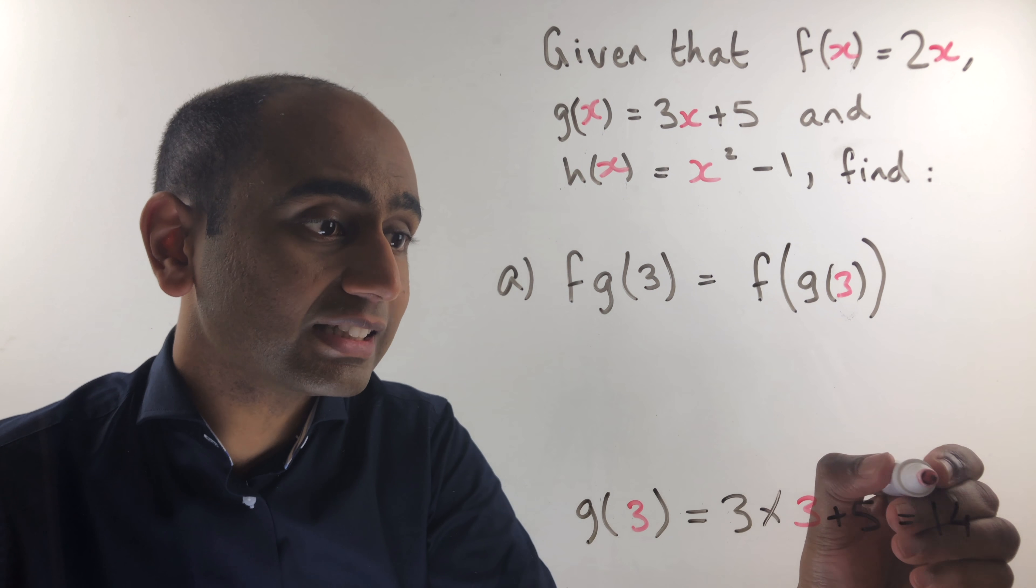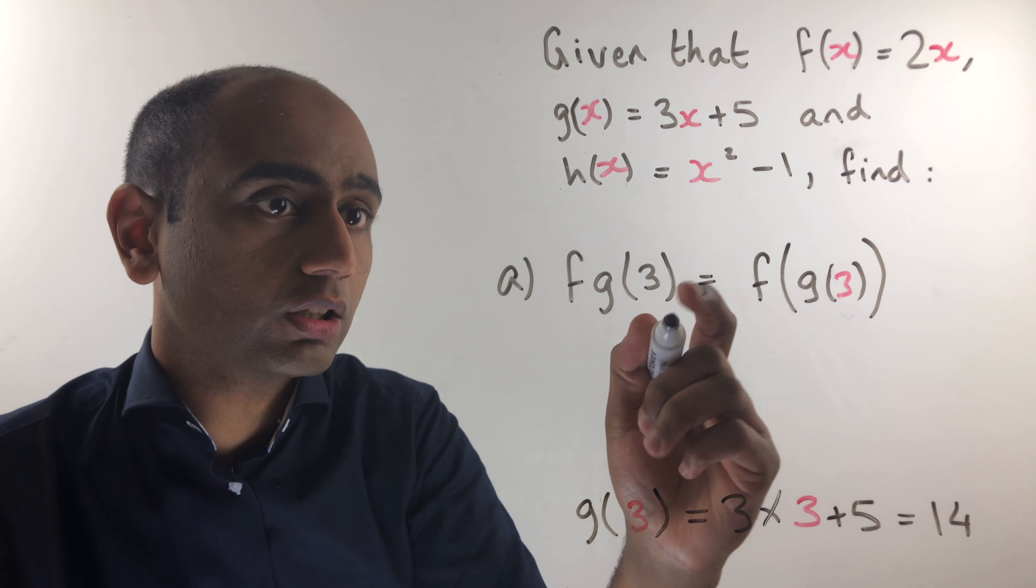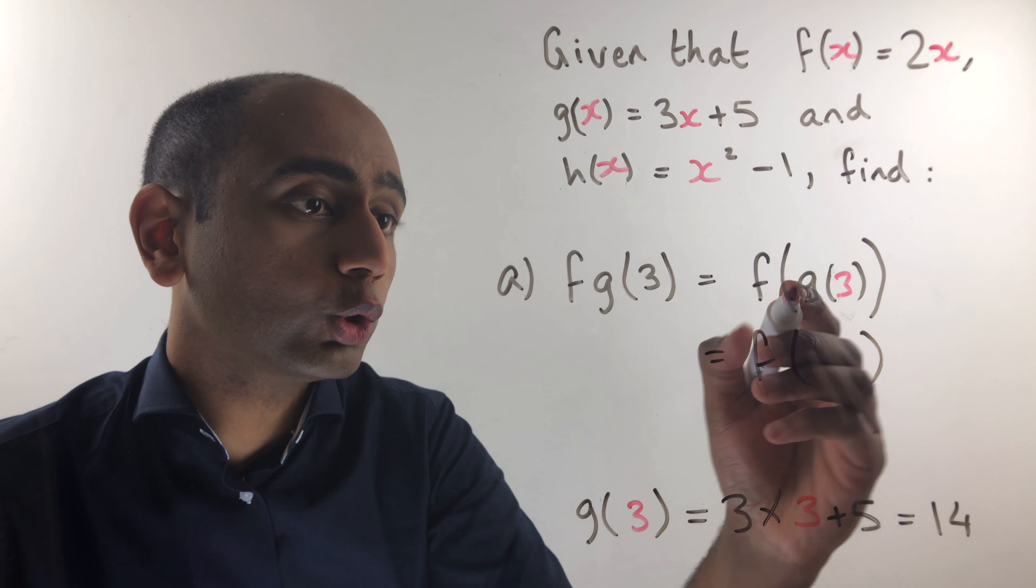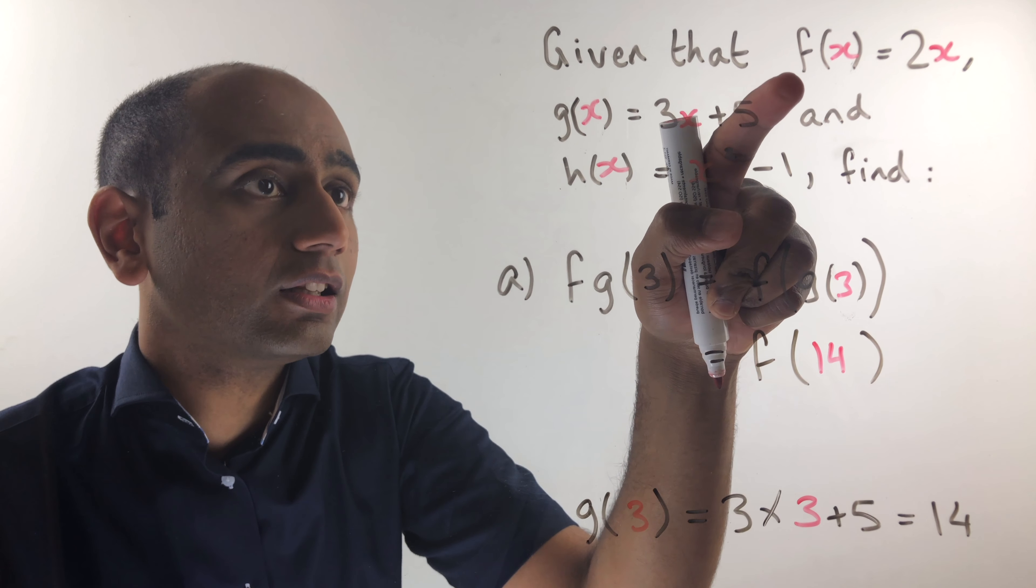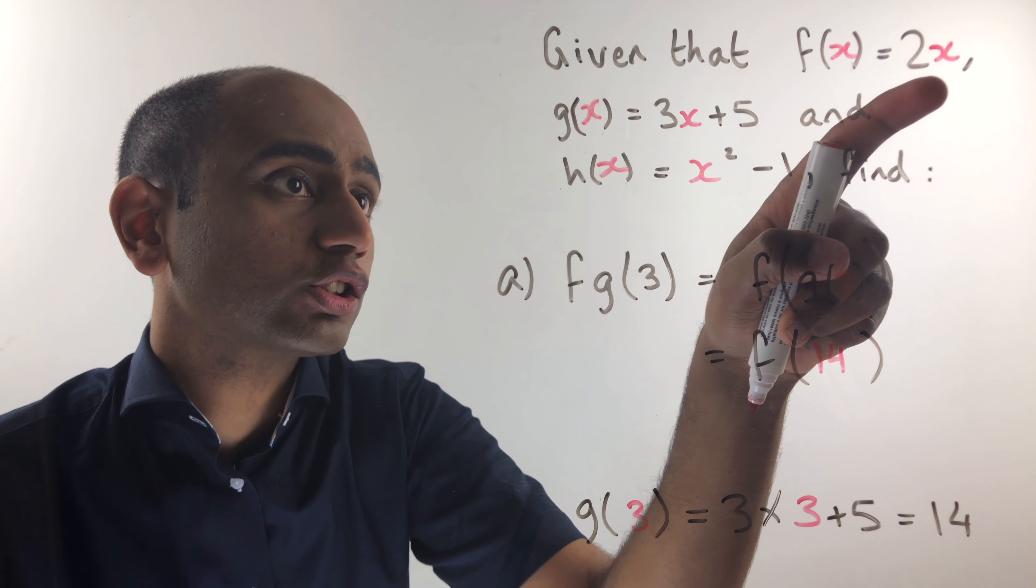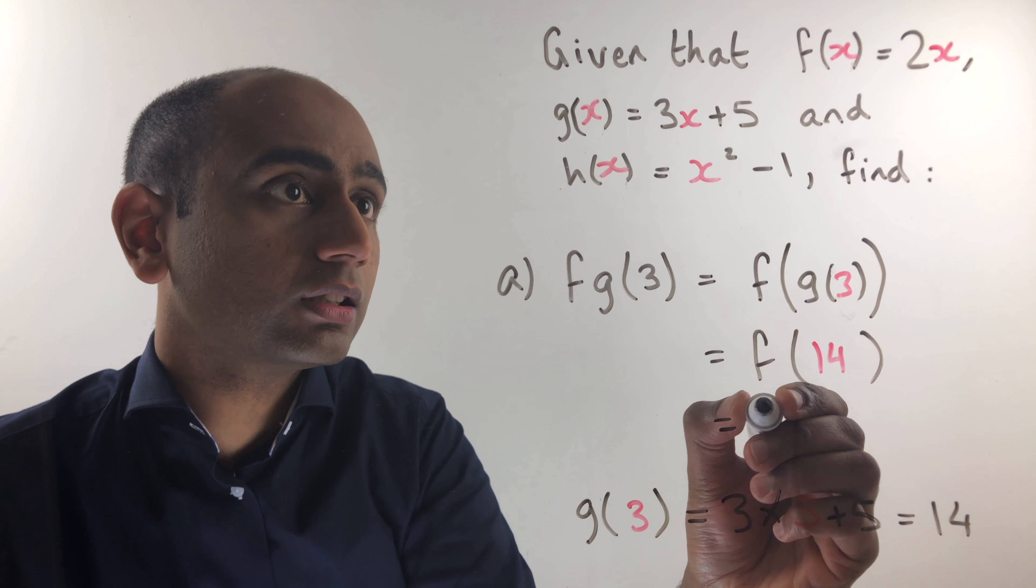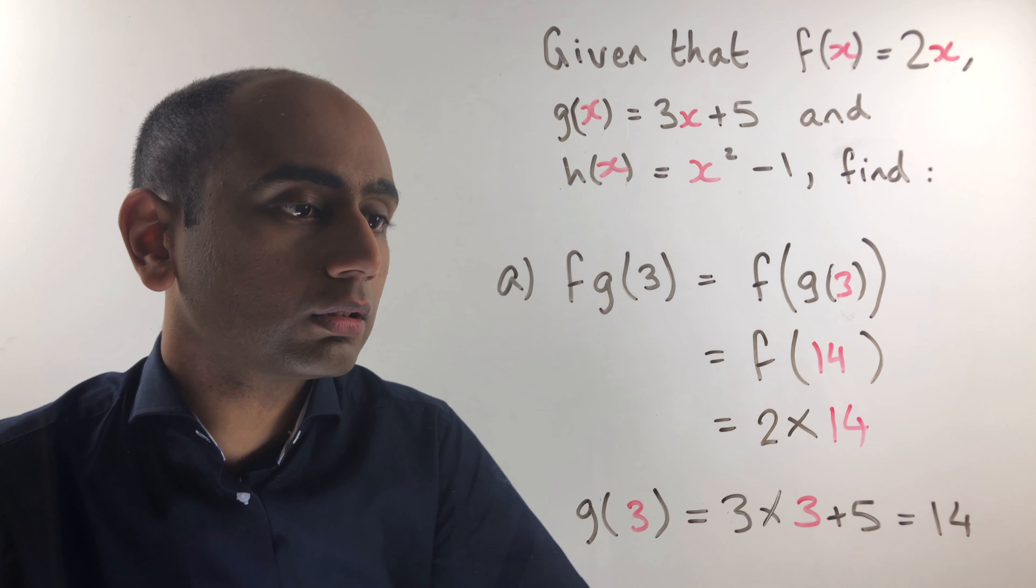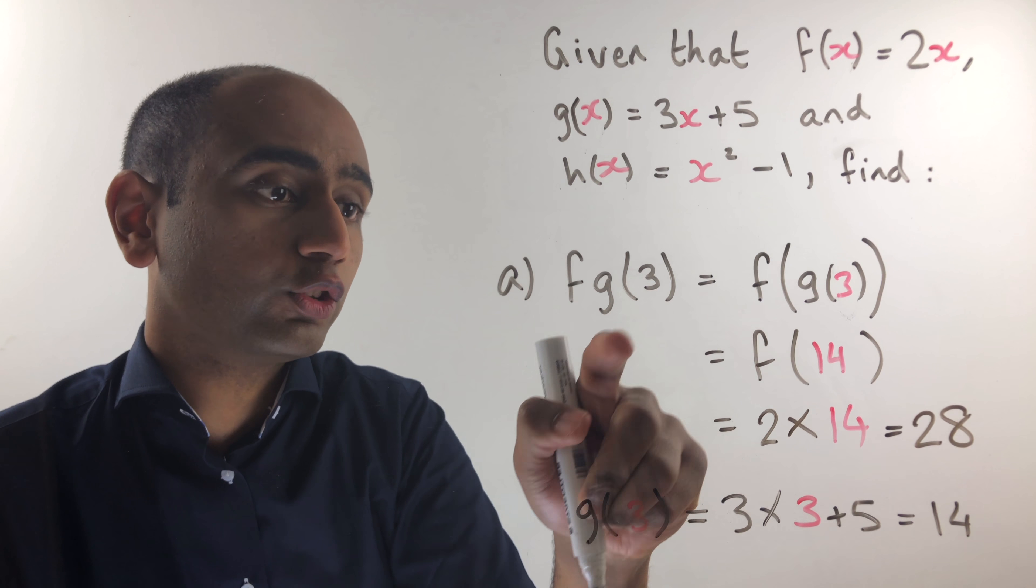So 14 is now what we're going to input into the function f. So fg of 3 is simply f of 14. So I'm going to use the input of 14 in the function f now. f of 14 is going to be 2 lots of 14. All I do is I substitute the x. So that's simply 2 times 14 and that equals 28. So fg of 3 is 28.